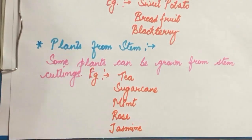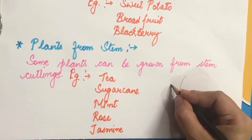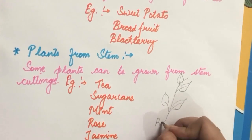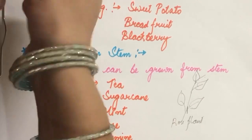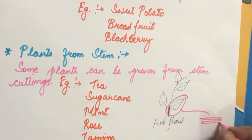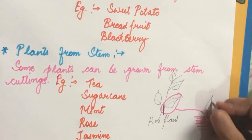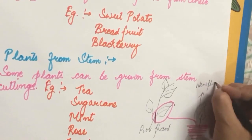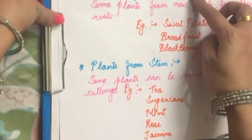Just imagine this is a plant. What we will do is cut the stem from here, take this part, and bury it in the soil. This plant part can give rise to a new plant. We have now covered Plants from Roots and Plants from Stem. These examples are important from the examination point of view.